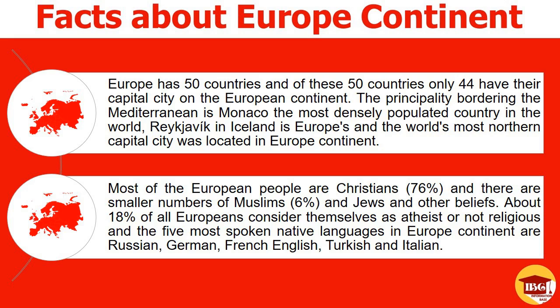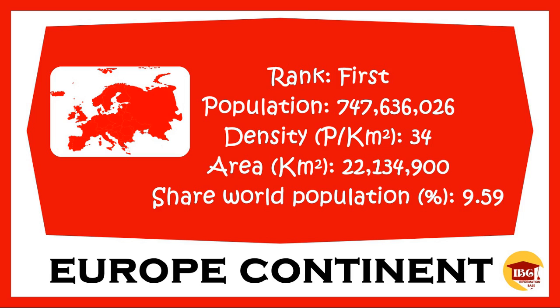The five most spoken native languages in Europe continent are Russian, German, French, English, Turkish, and Italian. The total area of Europe continent was 22,134,900 km² with 34 people per square kilometer density. The population around the continent of Europe was around 747,636,026 and shares the world population about 9.59%.